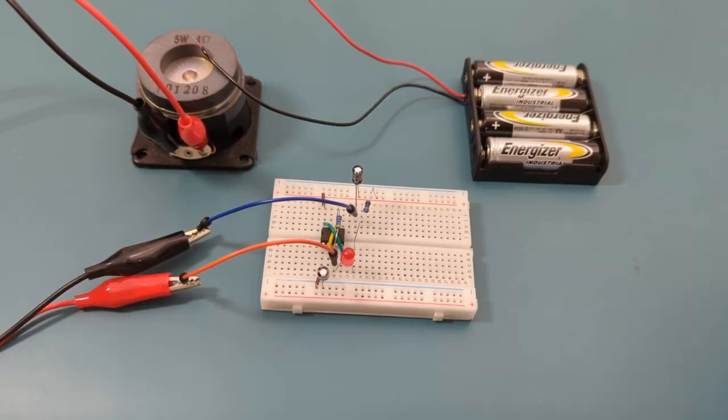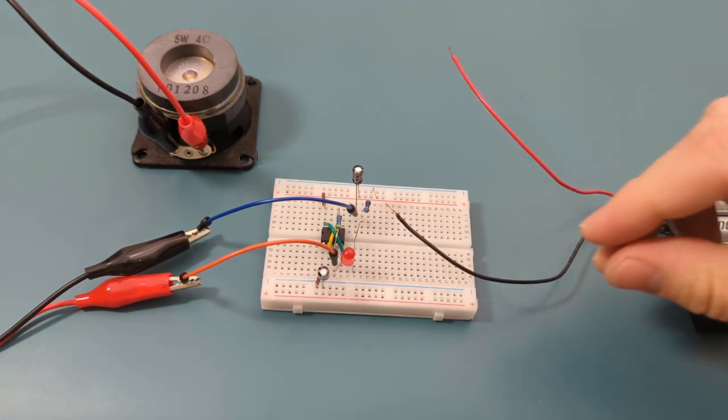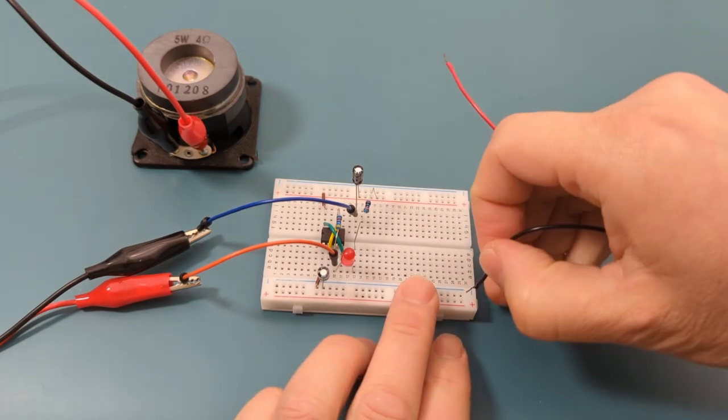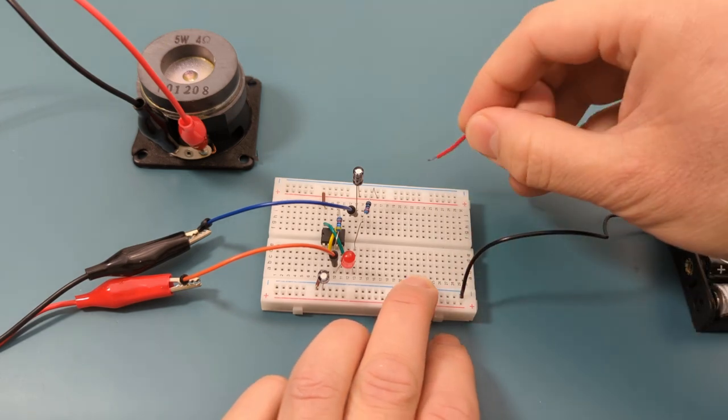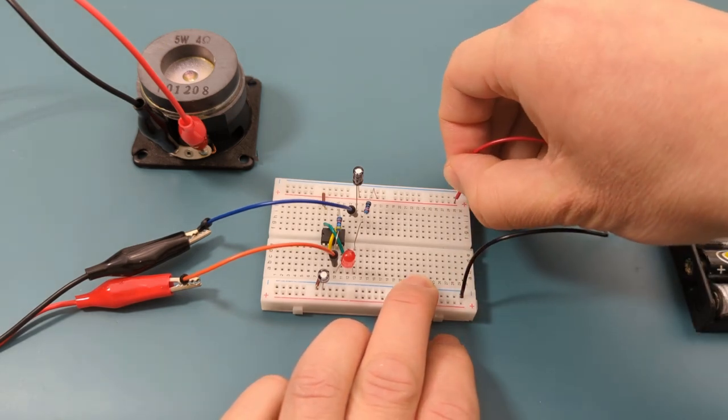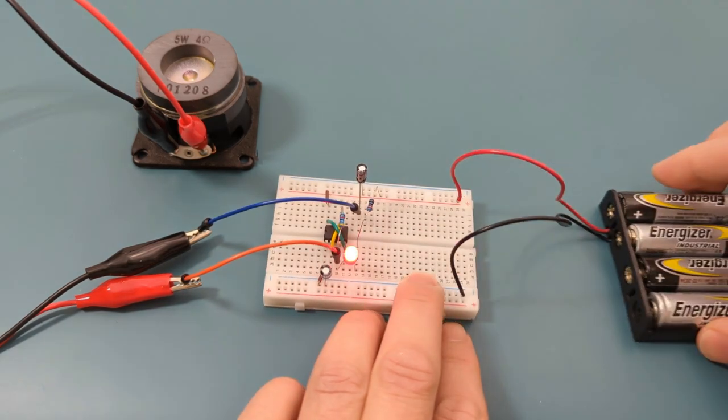It's time to connect the power supply. Attach the negative lead from the battery holder to the negative rail. Attach the positive lead from the battery holder to the positive rail. We have successfully completed the circuit.